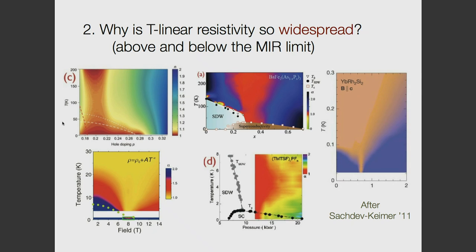Another question you might ask is why is T-linear resistivity so widespread? We have cuprates, pnictides, organics, heavy fermions, strontium ruthenates, and these bits in the middle of the phase diagram are all showing T-linear resistivity. Furthermore, many of the properties of these T-linear resistivity materials, such as the scattering rate you might extract, are rather similar across quite different compounds where you might expect the microscopic scattering mechanisms to be different.